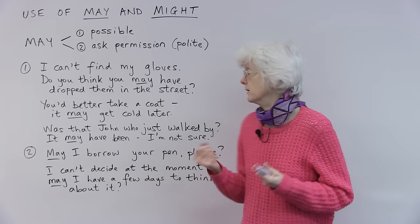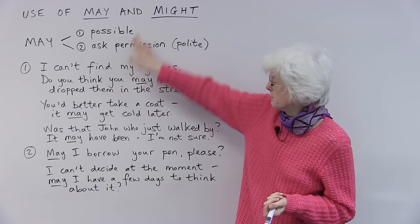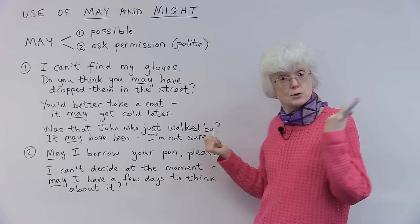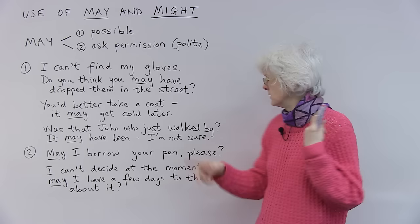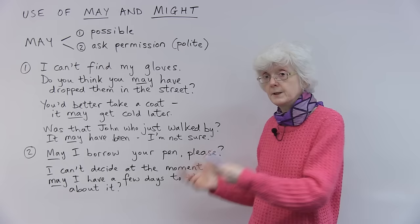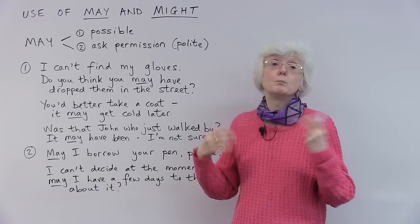And then finally, for these examples of what is possible, I say to my friend, was that John who just walked by? Someone walked by, was that John? And my friend replies, it may have been. I'm not sure, because my friend didn't really see. It may have been, but I'm not really sure. So possibly, possibly it was John. I'm not 100% sure.